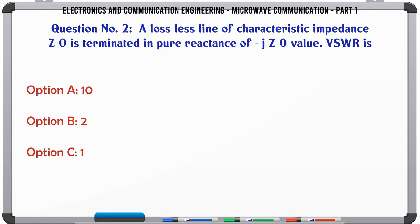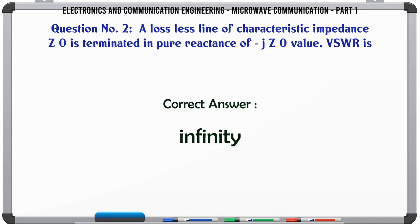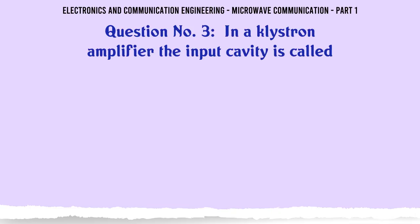A lossless line of characteristic impedance Z0 is terminated in pure reactance of JZ0 value. VSWR is: A. 10, B. 2, C. 1, D. Infinity. The correct answer is Infinity.